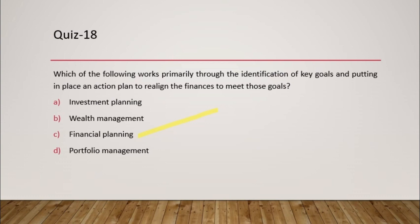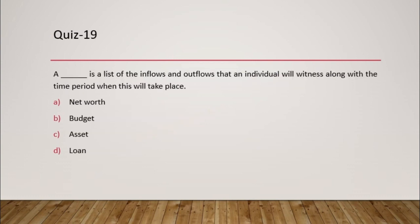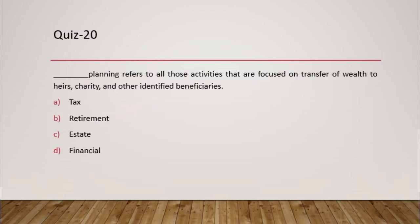Question 19 is a fill-in-the-blank: 'A blank is a list of inflows and outflows that an individual will witness along a time period.' This clearly refers to a budget — a budget is a list of inflows and outflows. Asset, net worth, and loan are ruled out. The answer is budget.